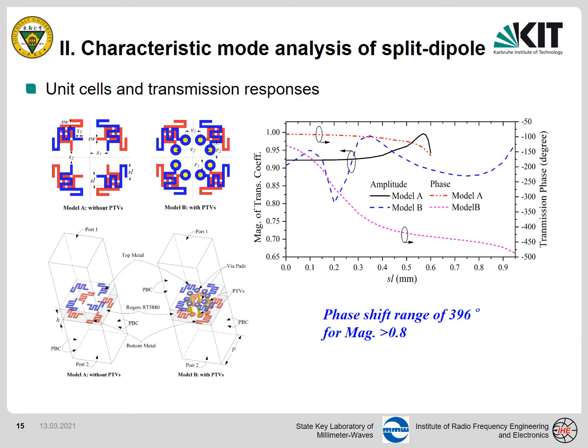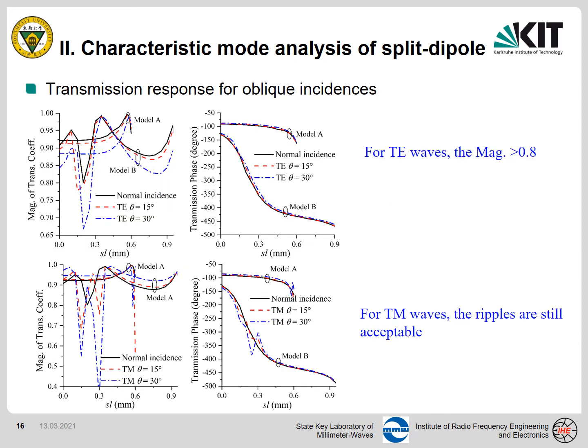To extend the phase shift range of the unit cell, we use two types of unit cells — with and without wires. The achieved phase shift range is around 400 degrees, and the magnitude of transmission coefficient is better than 0.8; in fact, most of it is better than 0.85. Then we study the transmission response for oblique incidence. For TE waves at 30 degrees, most of the magnitude of transmission coefficient are still better than 0.8, and the phase response is almost unchanged. For TM waves, ripples appear at 30 degrees, but they are still acceptable, and for most cases the transmission coefficient is still better than 0.7.